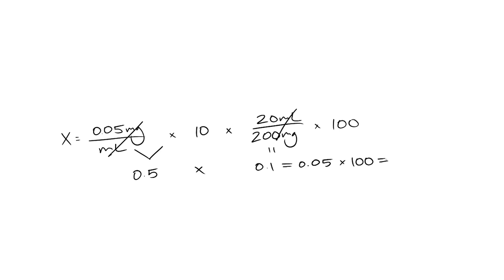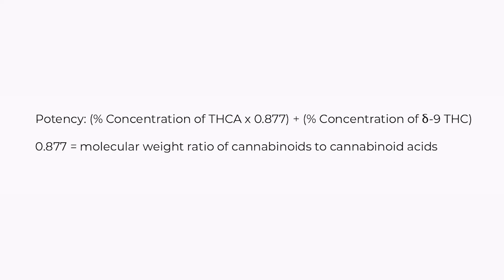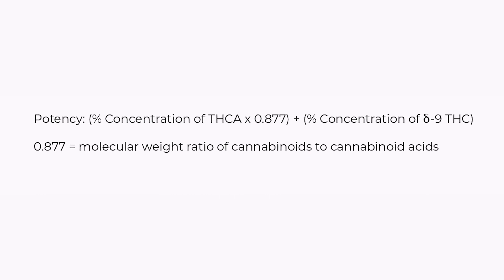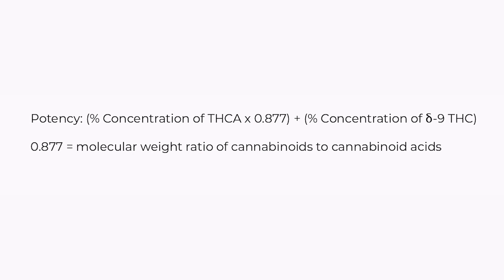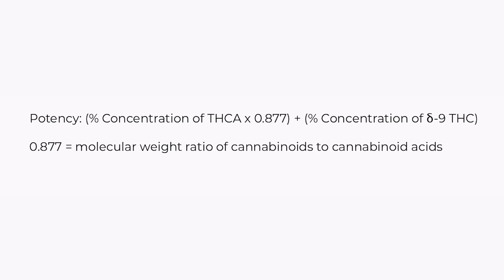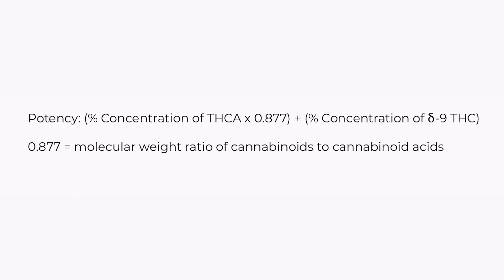If we multiply these together and multiply by 100 to get percentage, you'll see that we end up with roughly a 5% concentration of THCA. Potency is calculated by 0.877% of THCA plus the concentration of delta-9 THC. The reason why it's 0.877 is you need to decarboxylate THCA, so that's where the extra percentage is lost. When you add those two together, you get the total concentration of potency.